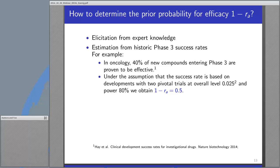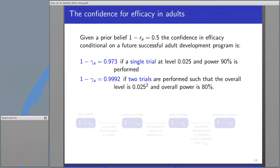Assuming for the remainder of the talk that 1 minus R_A is 0.5, we might ask: what is our confidence for efficacy in adults? Given a prior belief of 1 minus R_A equal to 0.5, the confidence in efficacy conditional on a future successful adult development program is, for example, 0.973 if you have just one single pivotal trial at the one-sided level of 2.5% and a power of 90%, or 0.992 if two trials are performed such that the overall level is 0.025 squared and the overall power is 80%.